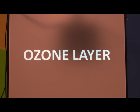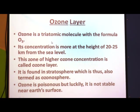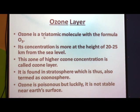After discussing the oxygen cycle, let us discuss about the ozone layer. Ozone O3 consists of three atoms of oxygen and its main function is to absorb the harmful ultraviolet rays of the sun, protecting the earth. Ozone is a triatomic molecule with the formula O3. Its concentration is more at the height of 20 to 25 kilometers from the sea level, and this zone of higher ozone concentration is called the ozone layer.